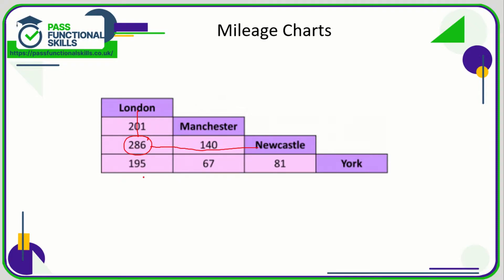So the distance from London to Newcastle is 286 miles. If you're asked what the distance is between Manchester and York, where do Manchester and York coincide? That would be 67 miles. You could get questions asking what the greatest distance is — just look for the biggest number. The greatest is 286, so that's London to Newcastle. The shortest distance is between Manchester and York at just 67 miles, which is smaller than every other number.